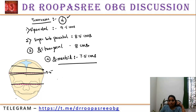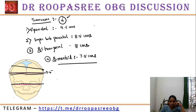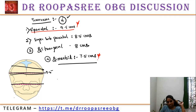Key questions from transverse diameters: the transverse diameter present in engagement is the biparietal diameter, about 9.5 centimeters. The shortest transverse diameter is the bimastoid, about 7.5 centimeters.